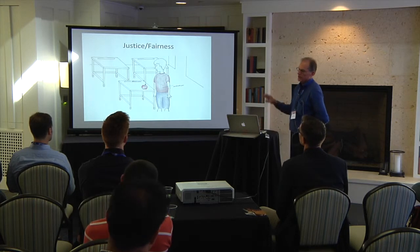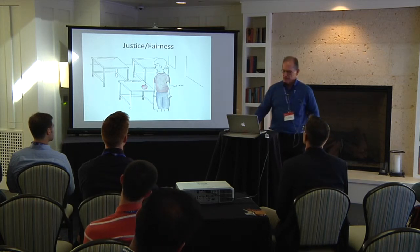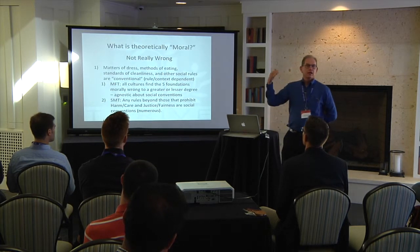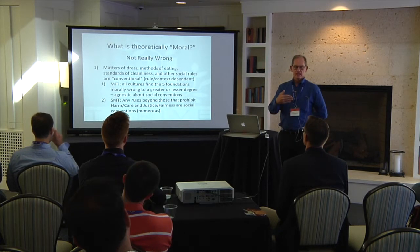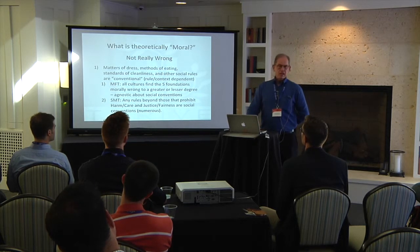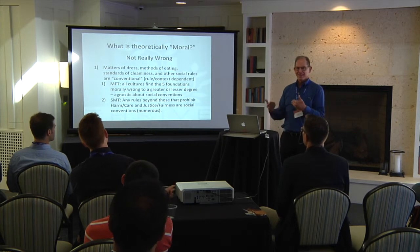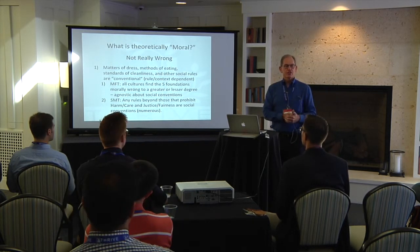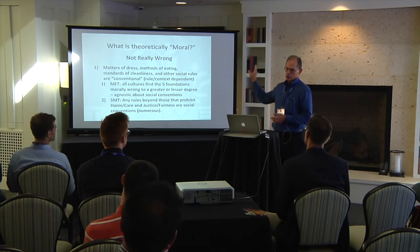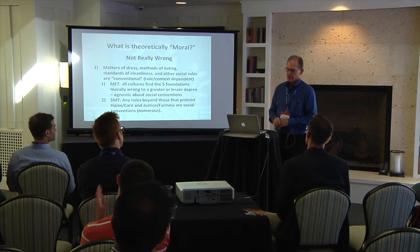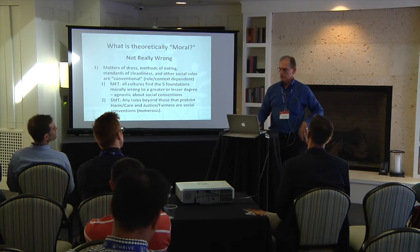The justice/fairness scenario was: Joey was hungry, he saw an apple on the desk. It didn't belong to him — it belonged to Johnny — but Joey took it anyway. Nobody was around and he ate the apple. We ask that series of questions to see what the kids say, and generally they found these wrong. Then there are matters of convention. According to Moral Foundations Theory, some things that might look like conventions are actually moral violations, but according to Social Moral Theory it's really just harm/care and justice/fairness that are wrong — these other social conventions are considered conventional, non-moral violations.